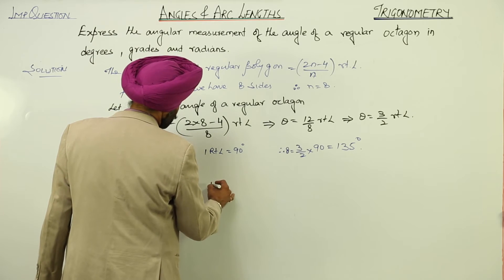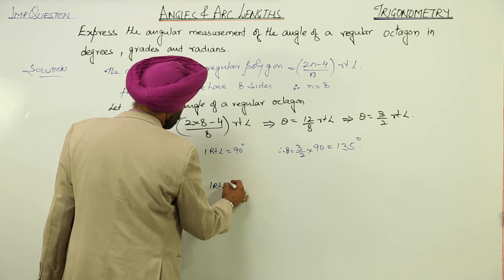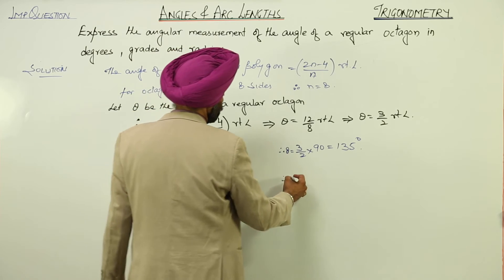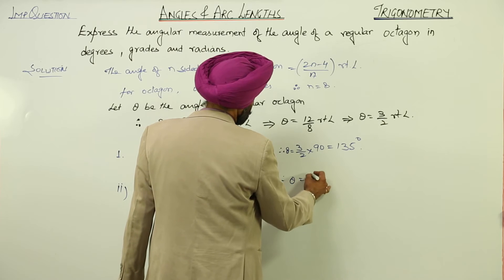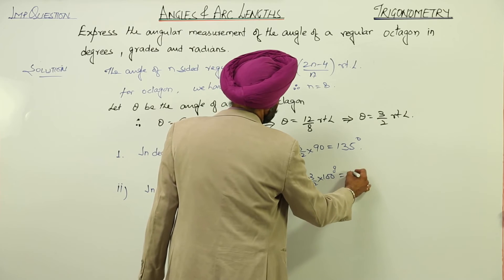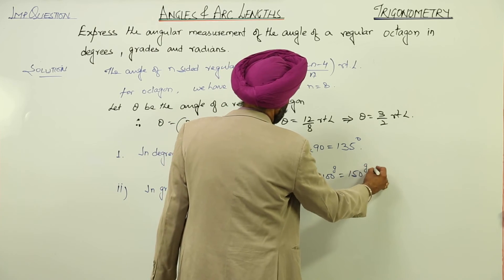Now, 1 right angle is equal to 100 grades. Therefore, theta is equal to 3 by 2 into 100 grades, is equal to 150 grades.